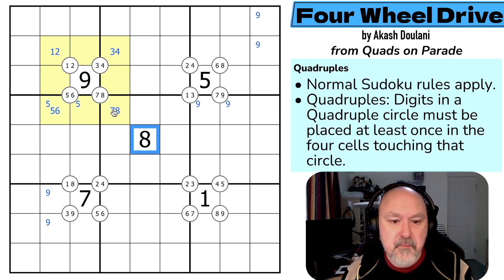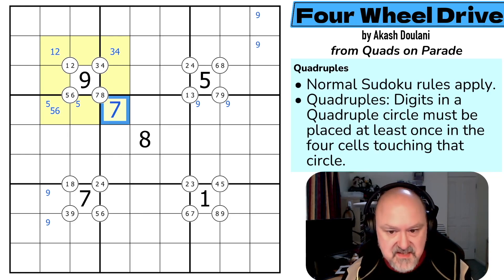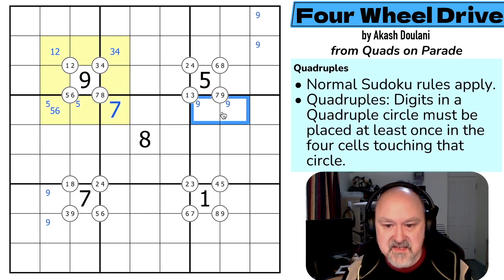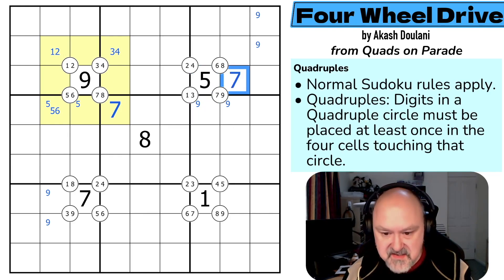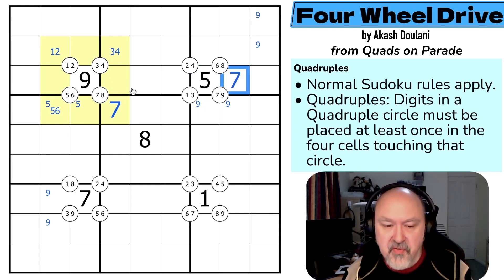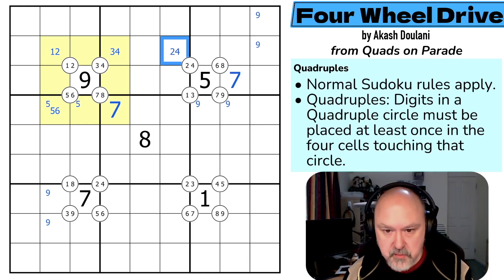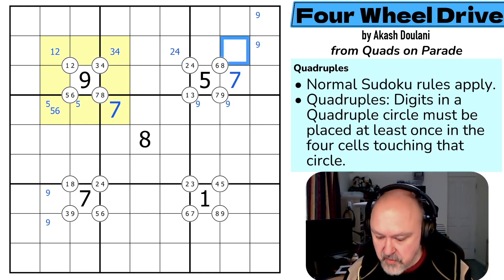And this can't be an eight. This is a seven, which means these aren't seven but I have to put a seven around here. This is a seven. That's beautiful.